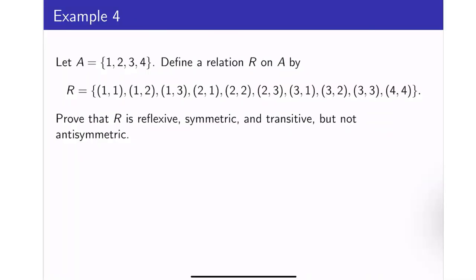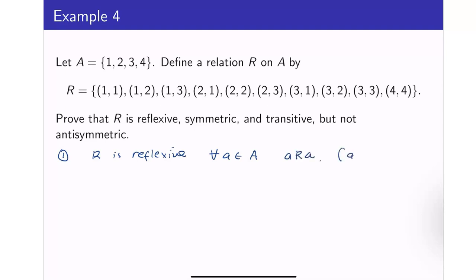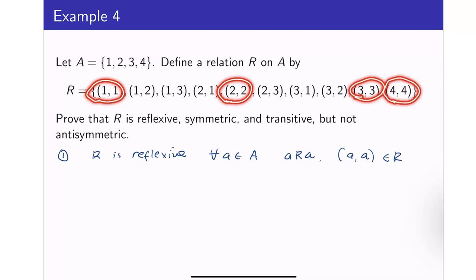Let's look at example 4. We define a relation R on A where A = {1, 2, 3, 4}. Let's see whether it is reflexive, symmetric, and transitive, but not antisymmetric. For reflexivity, A must always be related to itself, meaning (A, A) must be in R. Notice that (1,1), (2,2), (3,3), and (4,4) are all in R. So therefore R is reflexive.